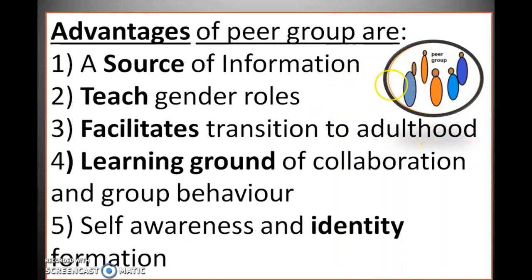If you are in a peer group, you can learn about your gender roles. In a female-only group, females learn from each other how to behave and how to live in society, and similar is the case with boys. A third advantage is that peer groups facilitate transition to adulthood. During the adolescent phase, students in a peer group learn how to cooperate, coexist, socialize, talk to each other, express emotions and feelings, and how to empathize with others. This makes their path smooth while undergoing the transition from adolescence to adulthood, making it a facilitating ground for adolescents.